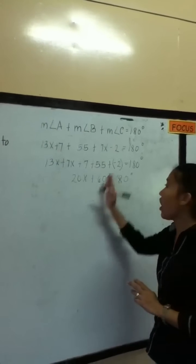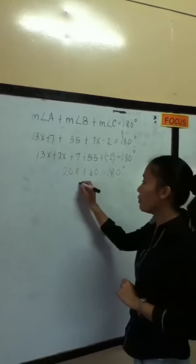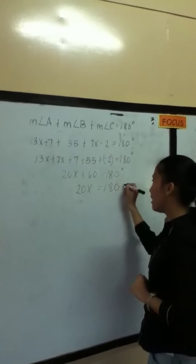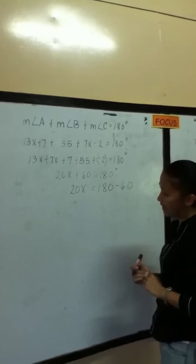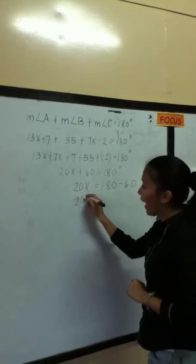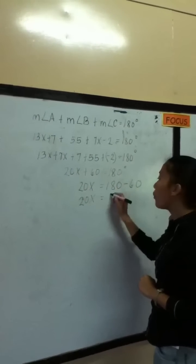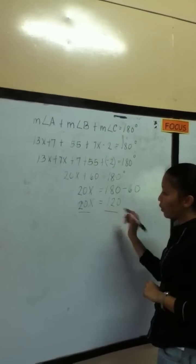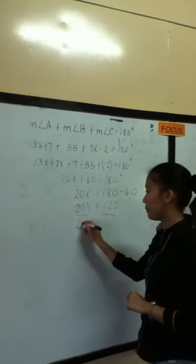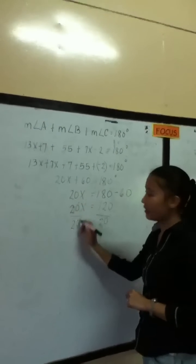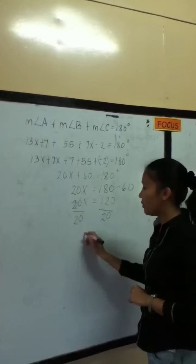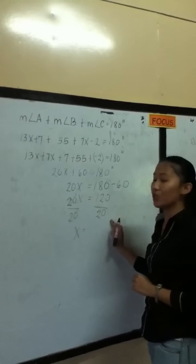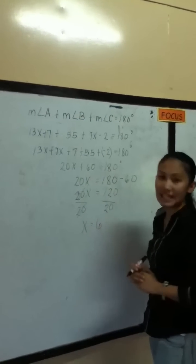Transposing 60 to the other side of the equal sign, we get 20x equals 120 degrees. Dividing both sides by 20, we cancel to leave x alone, and 120 divided by 20 gives us x equals 6.